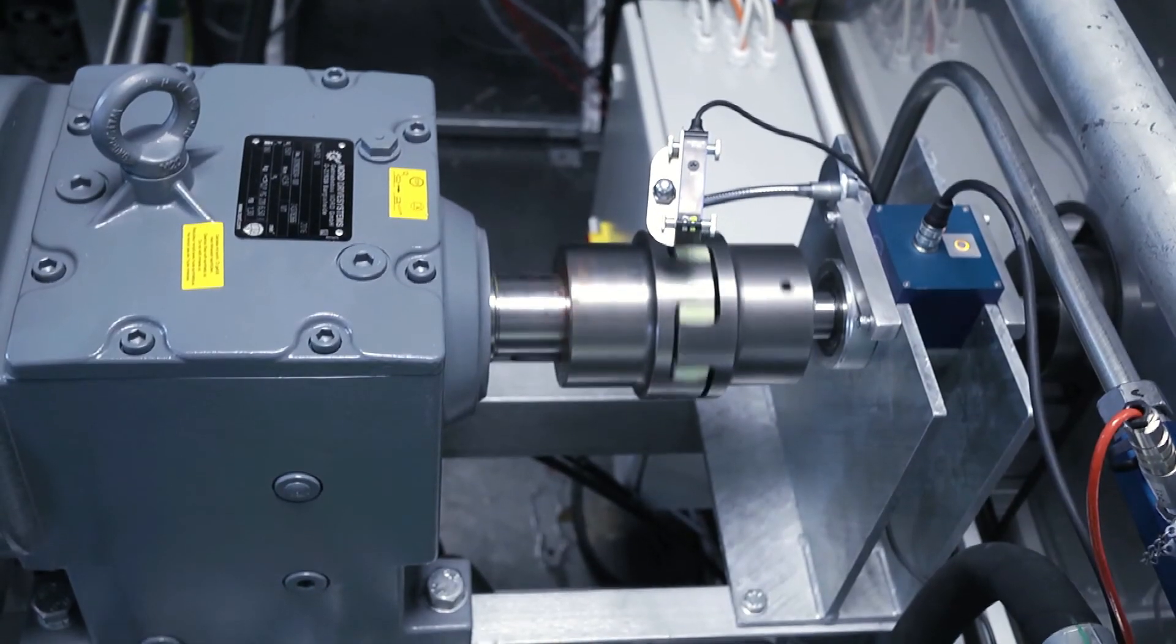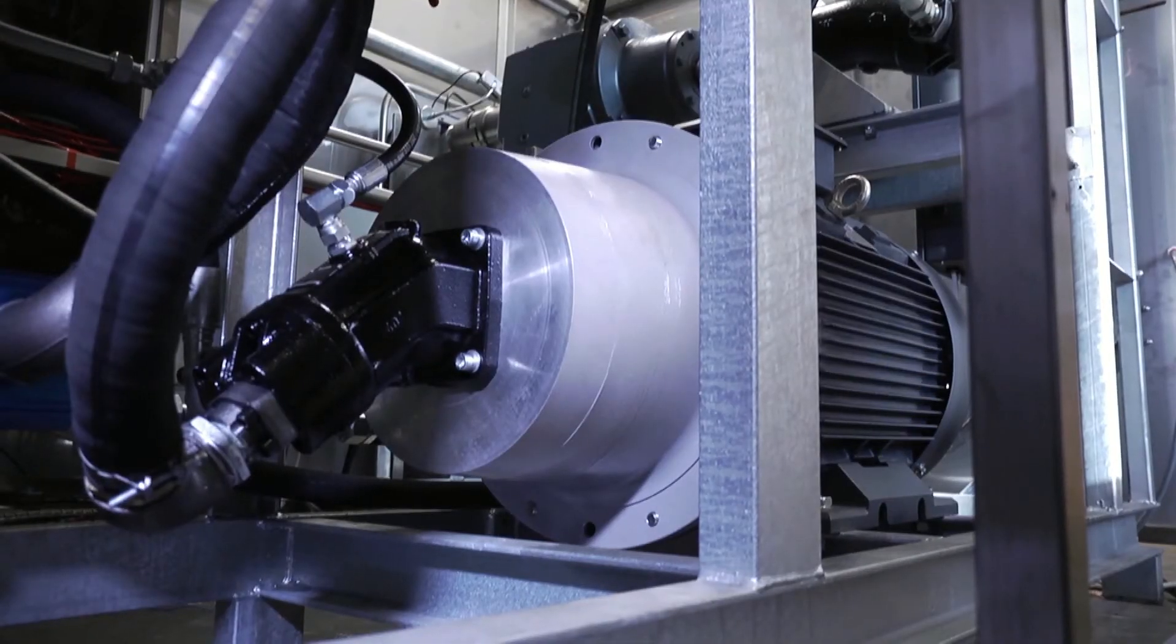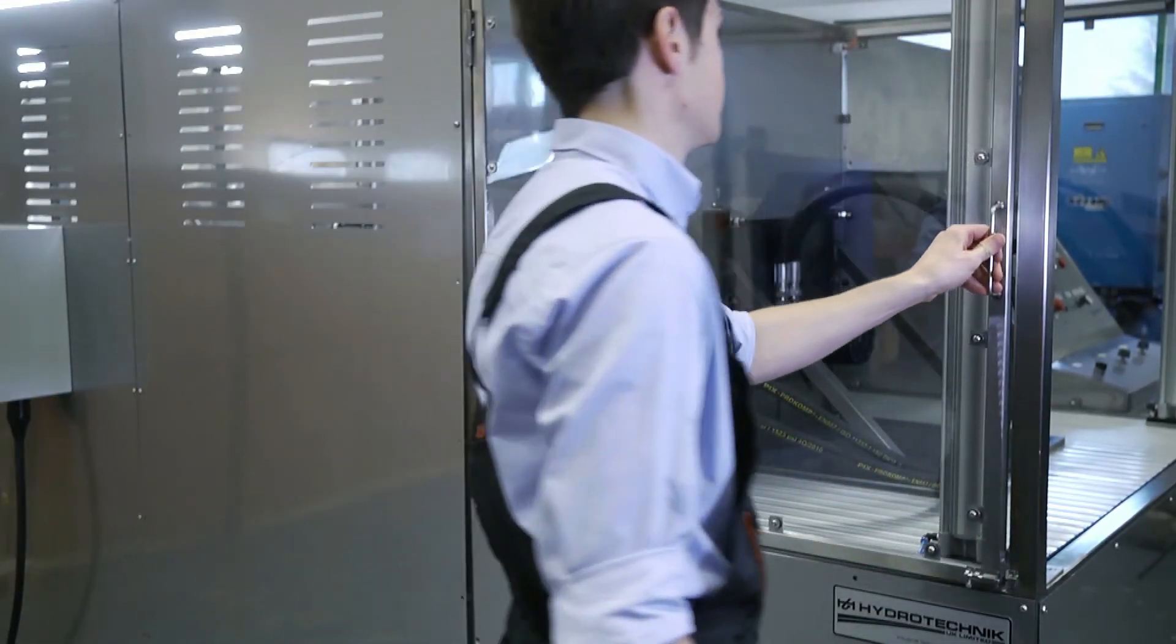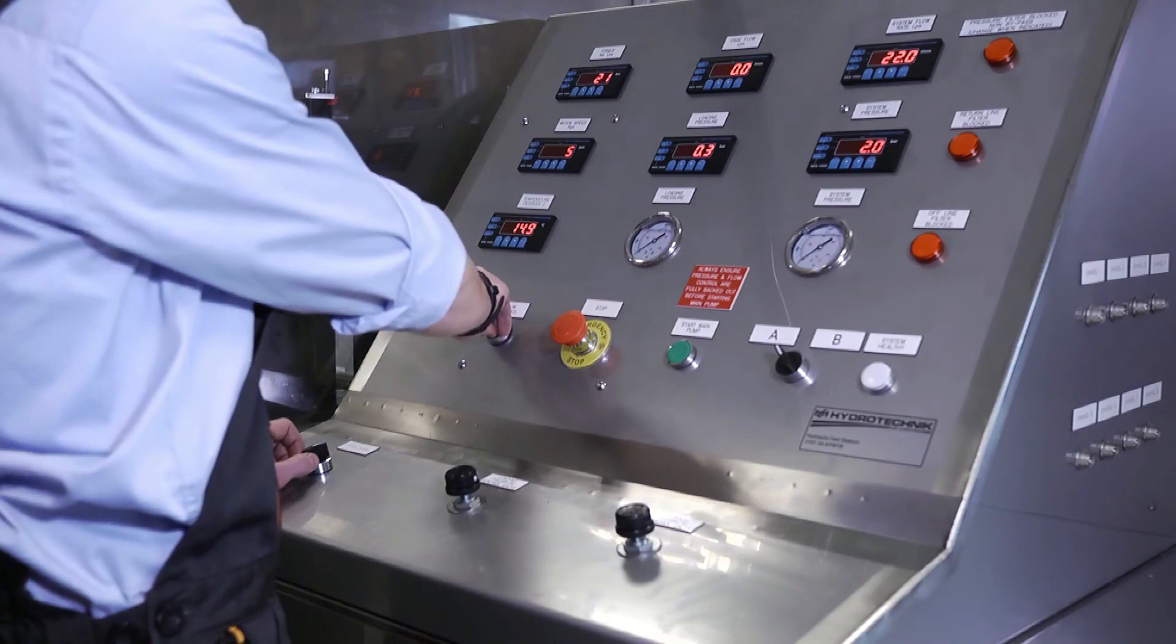We've integrated all the safety features that are required for testing like this. We have an automated door, polycarbonate side windows. The interlocks are integrated within the system that let you run it if it's safe and won't let you in if it isn't.